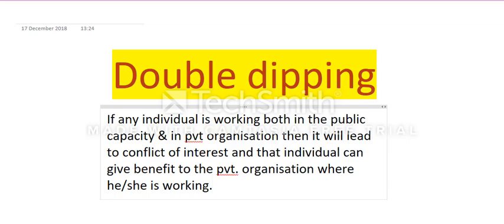The next one is double dipping. What is double dipping? If any individual is working both in a public capacity and in a private organization, it will lead to a conflict of interest. That individual can give benefit to the private organization where he or she is working. There is a possibility that they can leak information to the private organization — since they work in both government and private sectors with similar types of work. This is double dipping.